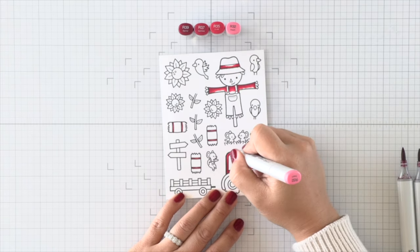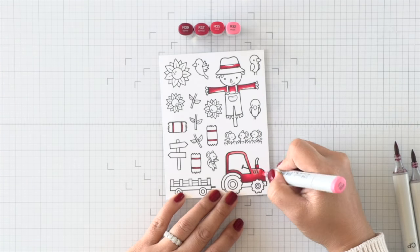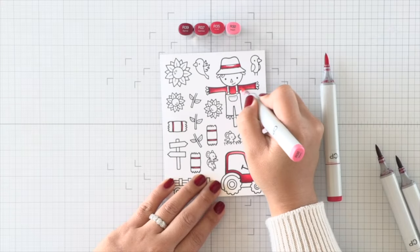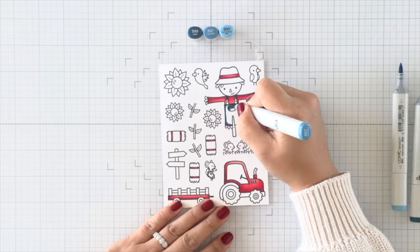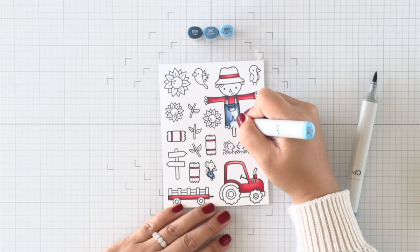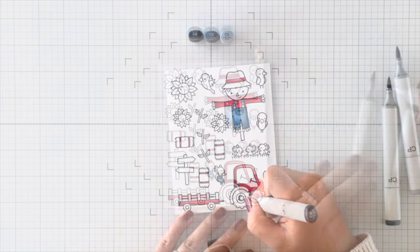I'm using as few Copic markers as I can, so anything that I can color red here I'm coloring red, and then I'll use some denim colors for the overalls on the scarecrow as well as on the mice.